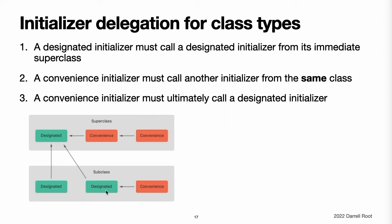These rules are illustrated in a figure. Here, the superclass has a single designated initializer and two convenience initializers. One convenience initializer calls another convenience initializer, which in turn calls the single designated initializer, satisfying rules two and three. The subclass has two designated initializers and one convenience initializer. The convenience initializer must call one of the two designated initializers because it can only call another initializer from the same class. Both designated initializers must call the single designated initializer from the superclass to satisfy rule one.